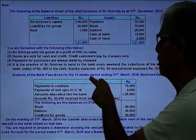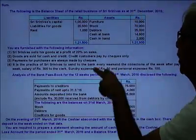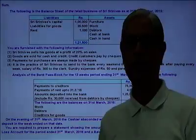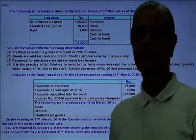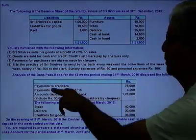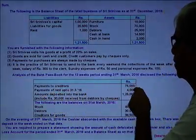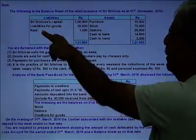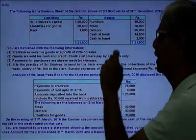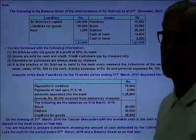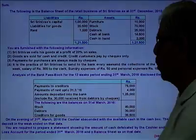Analysis of the bank passbook for 13 weeks — the period ending 31st March 2016 — discloses the following. The accounting period is from 1st January to 31st March, which is 3 months. This is the period for which we apply the conversion method for accounting under single entry. Payment to creditors and payment of rent up to 31st March 2016: 4,000.